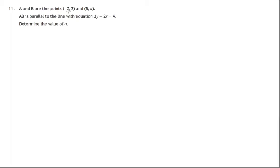Here we're given two points A and B. A is the point (-7, 2) and B is the point (5, a). We're asked to find the value of a.